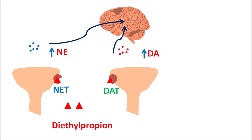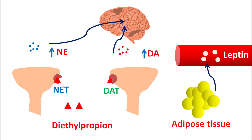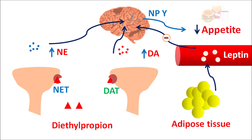Similarly, diethylpropion can act by another mechanism. Within the adipose tissue, lipolysis takes place, releasing the mediator leptin into the bloodstream. Elevated leptin levels in the circulation produce an inhibitory effect on neuropeptide Y. This neuropeptide Y is responsible for neuronal transmission and increasing hunger by stimulating the hunger centers. When neuropeptide Y is inhibited by leptin, it results in decreased appetite. In this way, diethylpropion can reduce appetite by increasing catecholamine transmission as well as decreasing neuropeptide Y transmission through elevated levels of leptin. All these mechanisms result in the suppression of appetite, which is why diethylpropion is used as an anorectic for the short-term management of obesity.